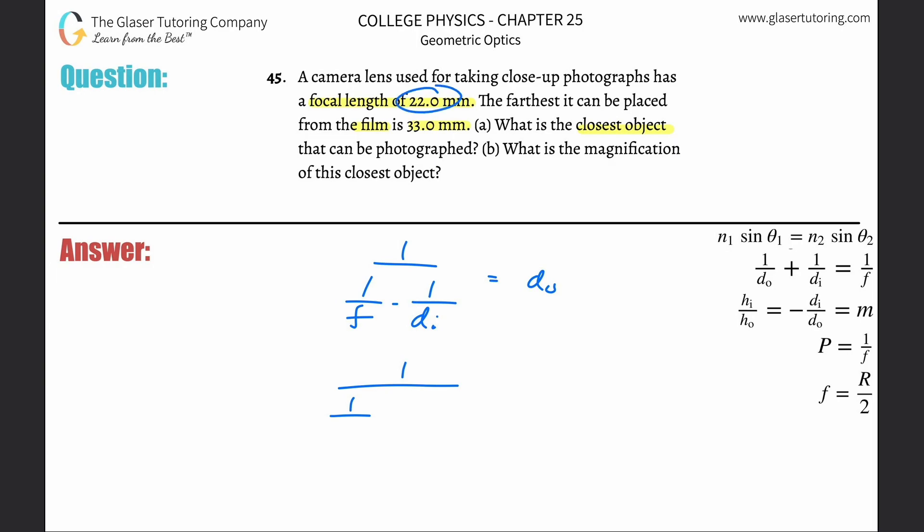Let me do this one in millimeters. So, one divided by 22 minus one divided by 33 equals the object distance. Do the denominator first: 1 divided by 22 minus 1 divided by 33, that's 0.0151... Then take 1 and divide it by that value. The answer comes out to be 66.0 millimeters, because we want three sig figs.